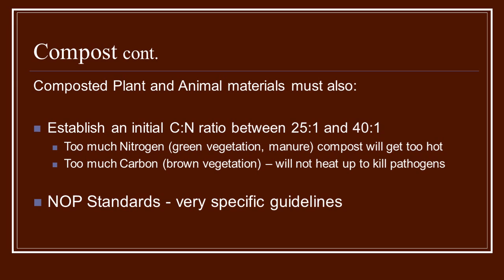Also in the production of compost using plant and animal materials, you need to establish a carbon-to-nitrogen ratio between 25 to 1 and 40 to 1. If there's too much nitrogen — the green vegetation and manure — your compost is going to get too hot, heating up and killing all the good microorganisms you want to retain. If you have too much carbon — brown vegetation — your compost will not heat up enough to kill all the pathogens. This is one reason why the NOP is very specific about how they want this to be done, because you're going to be spreading this into areas where you're growing food for other people.